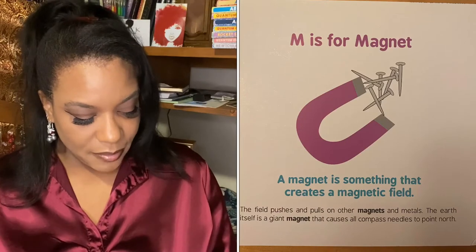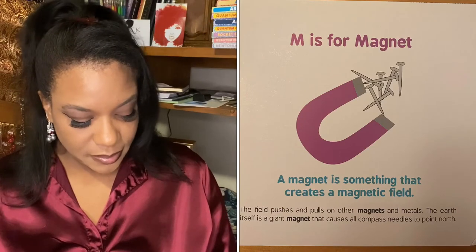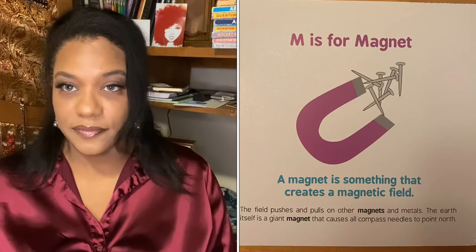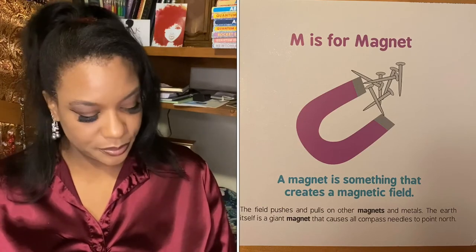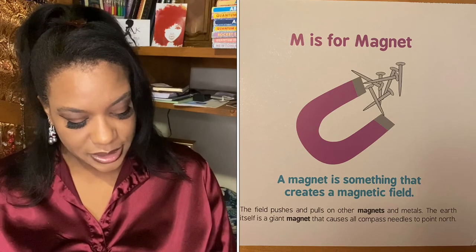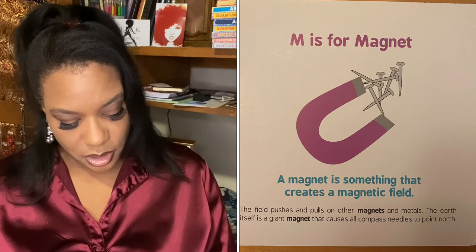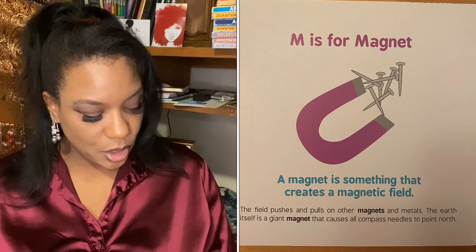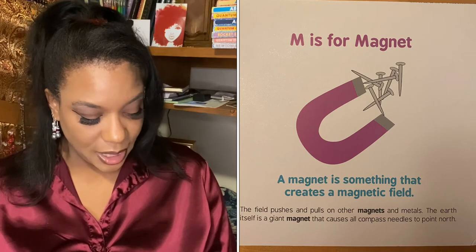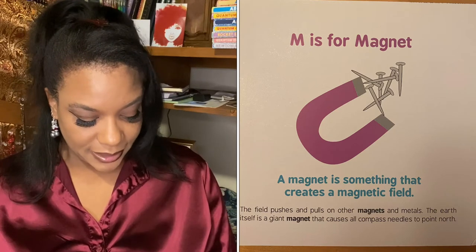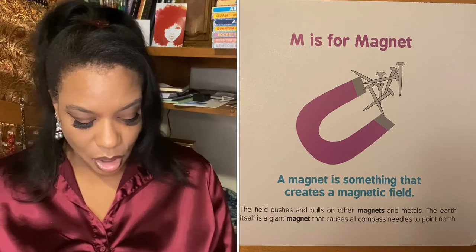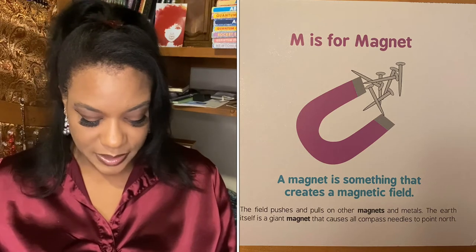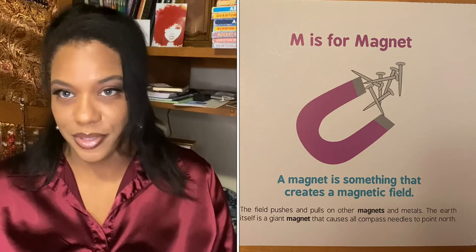M is for magnet. A magnet is something that creates a magnetic field. The field pushes and pulls on other magnets and metals. The earth itself is a giant magnet — it causes all compass needles to point north.